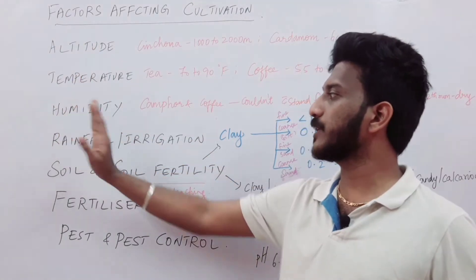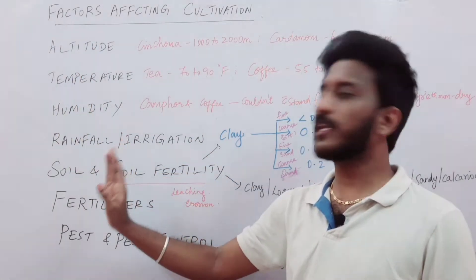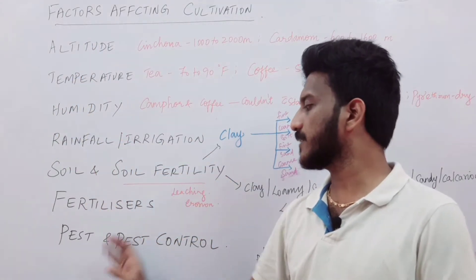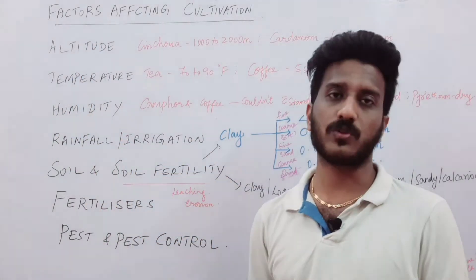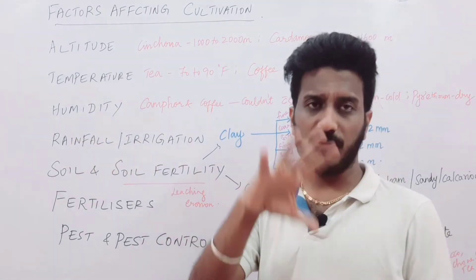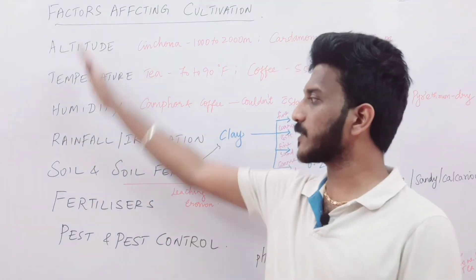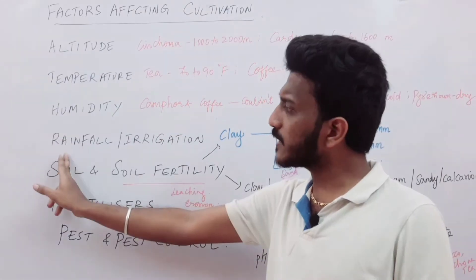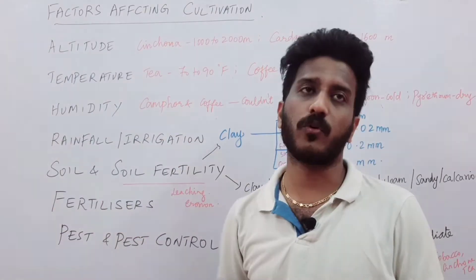These are the factors: altitude, temperature, humidity, rainfall and irrigation, soil and soil fertility, fertilizers, and pest and pest control. Since I have only five minutes, I could not explain all these factors — I will explain the first four.